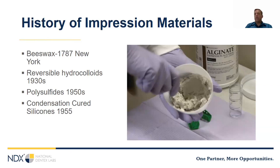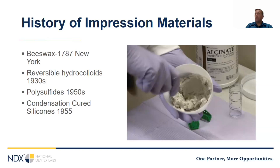The 1950s was when we started doing a lot more with fixed restorations. I worked with a laboratory that was kind of there at that point. Believe it or not, we were using alginate as an impression material for fixed crown and bridge work. There were rubber base and some other materials in that era. The beginnings of modern impression materials emerged in the 1950s, but they weren't as accurate as the alginates.